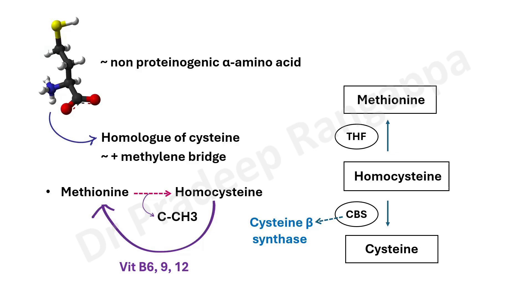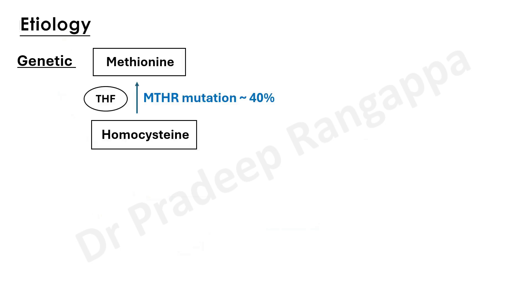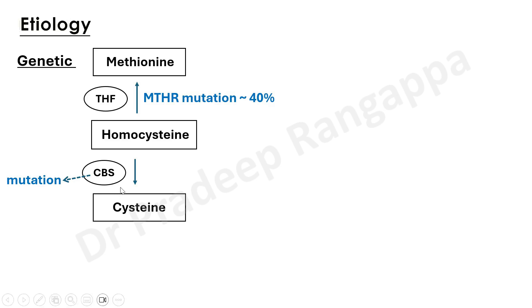Even if vitamins are present, if B6, B9, or B12 are at subnormal levels, whatever little conversion should happen can also be mitigated. The etiology in young individuals is predominantly genetically mediated. The most common genetic mutation — occurring 40% of the time — is in methyl tetrahydrofolate reductase, which prevents conversion of homocysteine to methionine. The second common cause is mutation in cystathionine beta synthase, preventing homocysteine from being converted to cysteine.